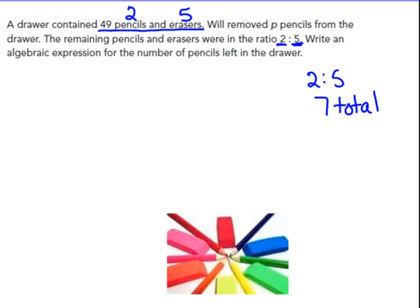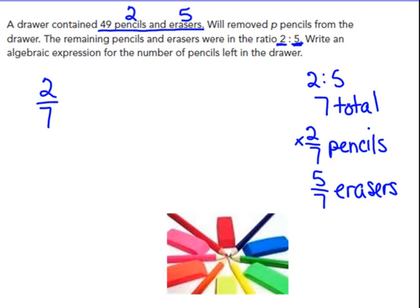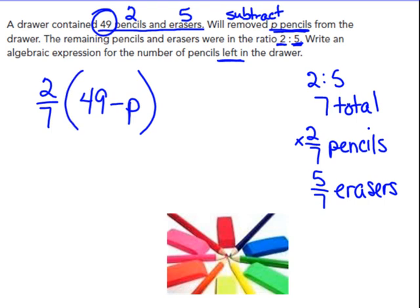If they're in the ratio of 2 to 5, that means there's 7 total parts. So the pencils represent 2/7. That's pencils. And the erasers, a lot more erasers in the file, is 5/7. First of all, I had to know that total. Write an expression for the number of pencils left in the drawer. So I need this 2/7. 2/7 of what's left in the drawer. 2 out of every 7 objects that are in there are going to be pencils. What's left in the drawer. What's left? Well, it started, I know, with 49 and then Will removed some of the P pencils. Removing means subtract. Starts with 49 and he takes away P of them.